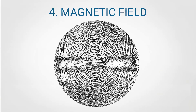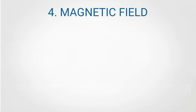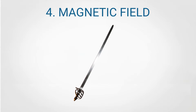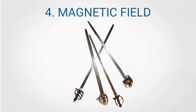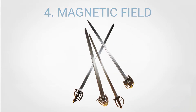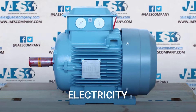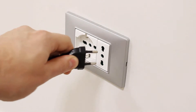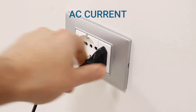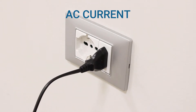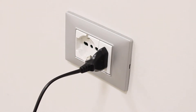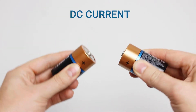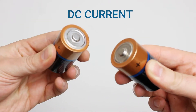Many materials can be magnetized. It seems that Archimedes tried to magnetize the Syracusan army weapons in order to easily disarm the enemies. Electric motors require electricity for their functioning. The common plugs and sockets represent alternating currents, an electric current which periodically reverses direction. Batteries represent direct current, an electric current which flows only in one direction.